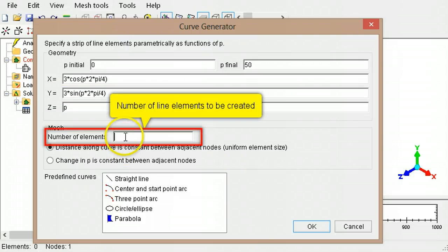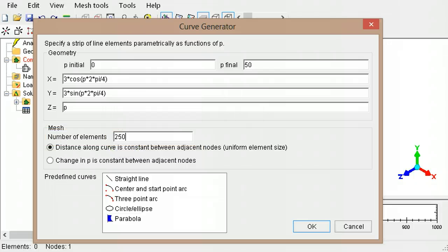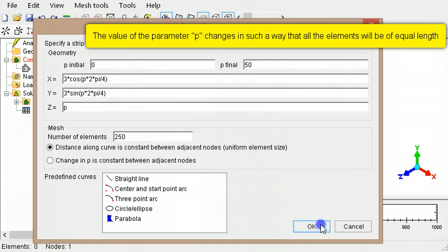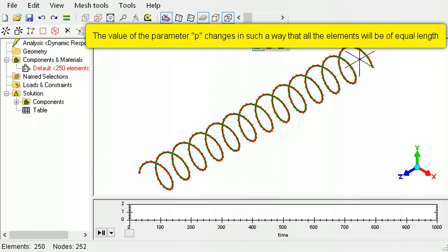Specify the number of line elements to be created. The change in the value of the parameter p is such that the element lengths are all equal.